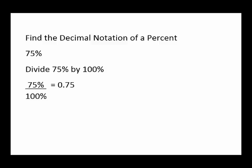Now we'll do a type of problem where you're asked to find the decimal notation of a percent. Here we have 75%, and we need to convert that to a decimal. We divide 75% by 100%. The percent signs cancel, and the answer is 0.75.